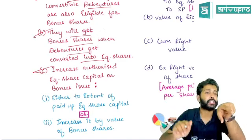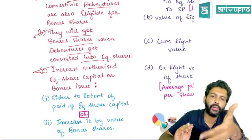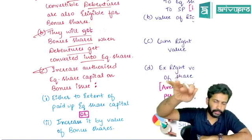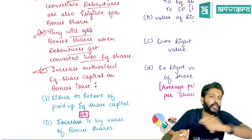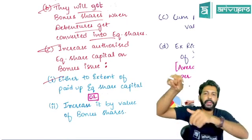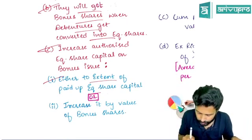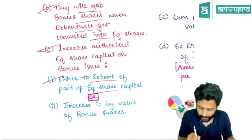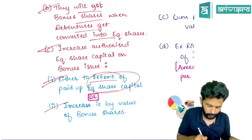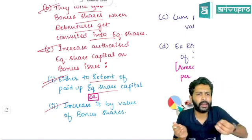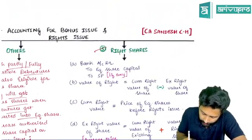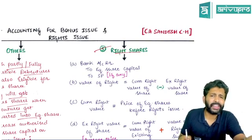Whenever you issue bonus shares, keep in mind something about authorized share capital: authorized share capital should never come below paid-up equity capital. If due to bonus shares the authorized capital falls below paid-up capital, two options are permissible: add the value of the bonus shares issued to the authorized capital, or make the paid-up capital and authorized capital the same. We have followed the second option in all our problems as it is less time-consuming.